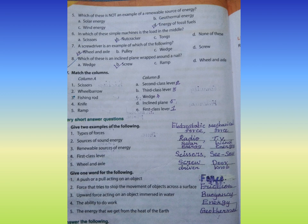Number three: Renewable sources of energy. Answer: Solar energy, wind energy. Number four: First class lever. Answer: Scissors, seesaw. Number five: Wheel and axle. Answer: Screwdriver, doorknob.